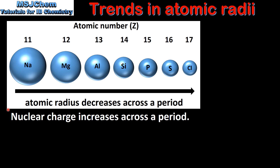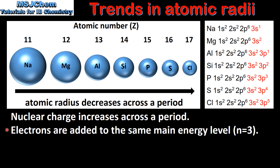The first reason for this is that the nuclear charge increases across a period. Starting with sodium which has 11 protons in the nucleus, the nuclear charge increases by 1 until we get to chlorine which has 17 protons in the nucleus. The second reason is that the electrons are added to the same main energy level, which is N equals 3.